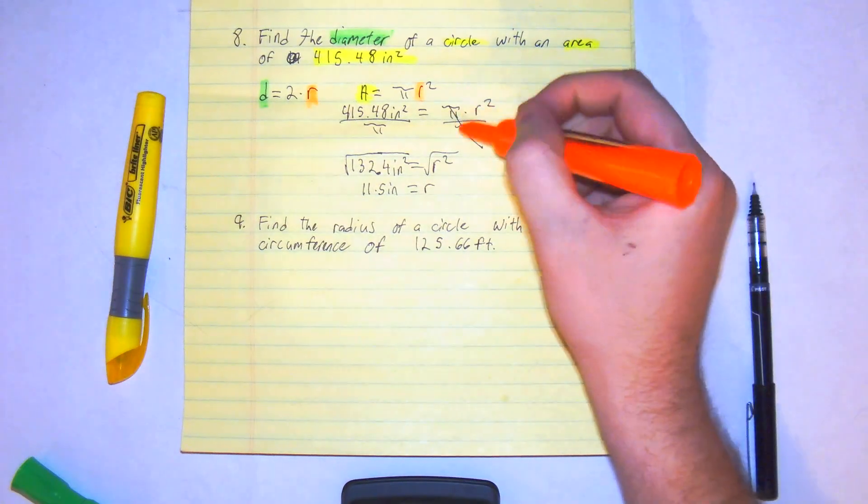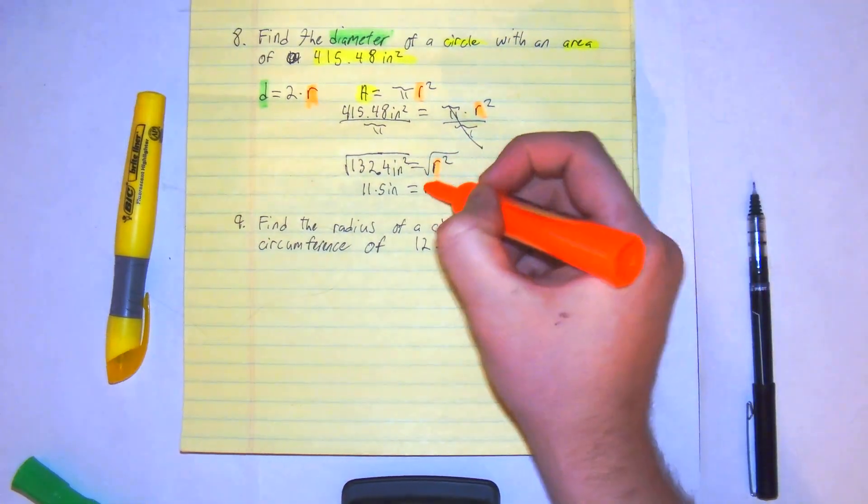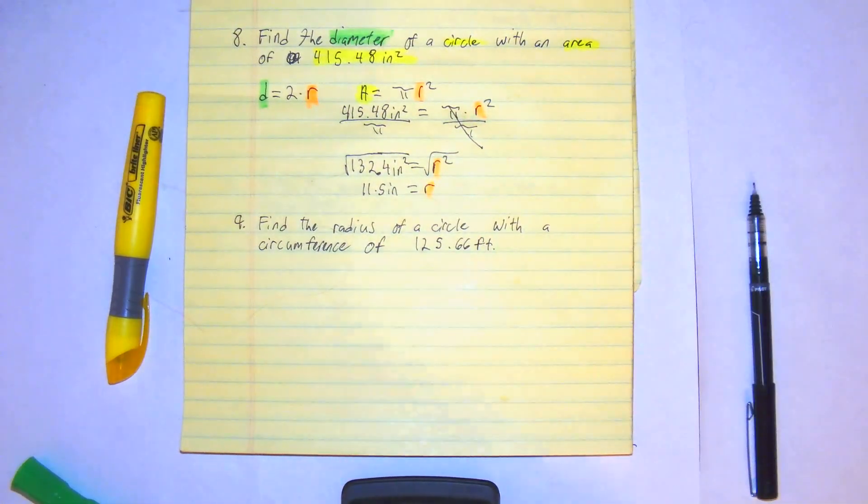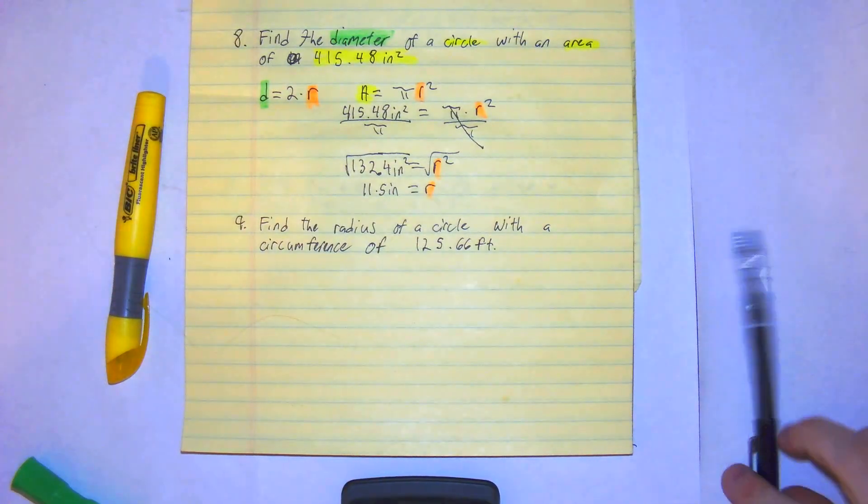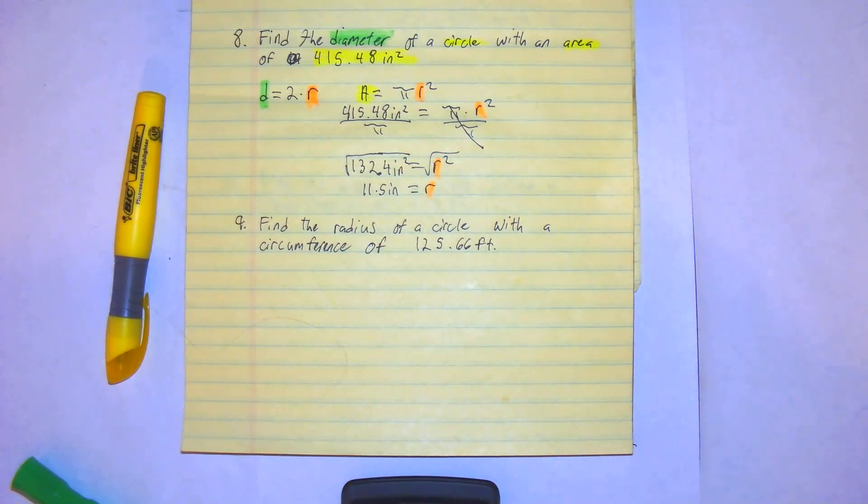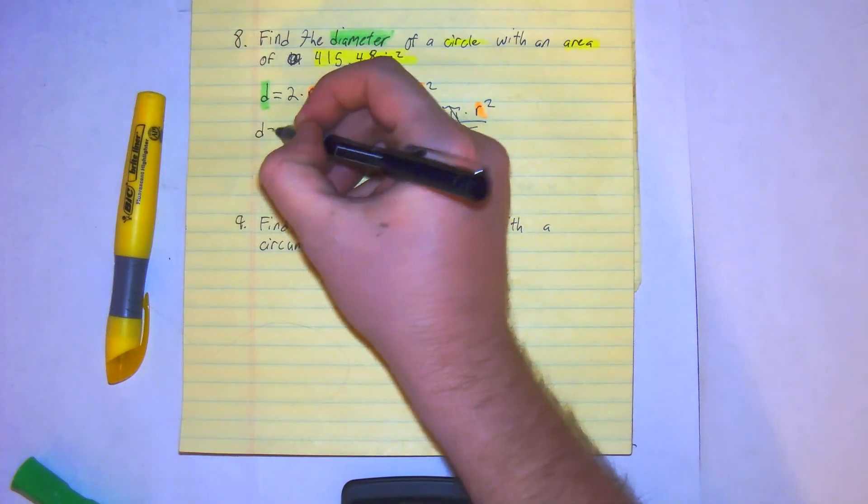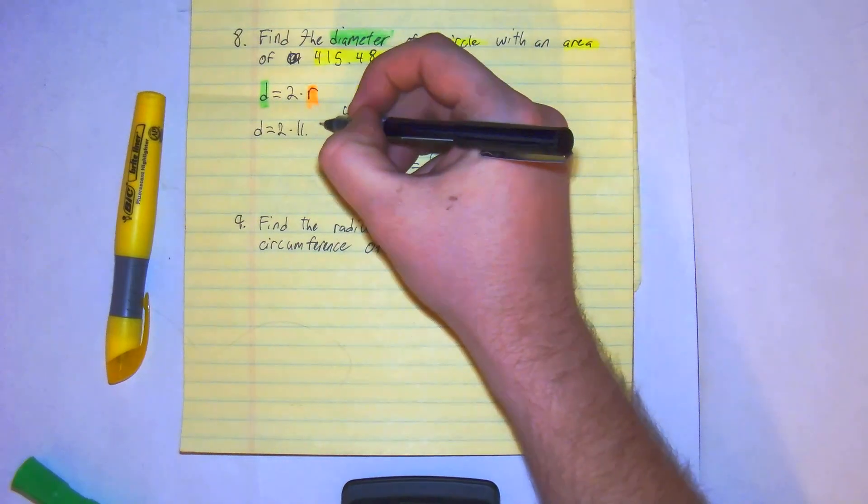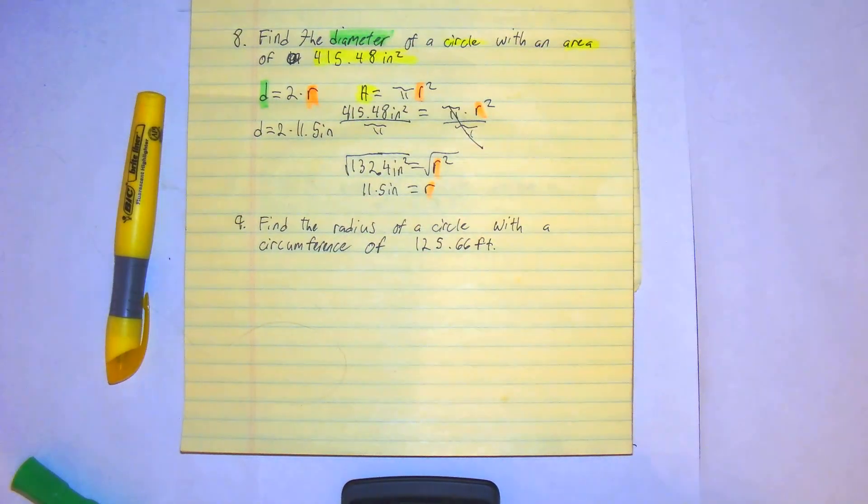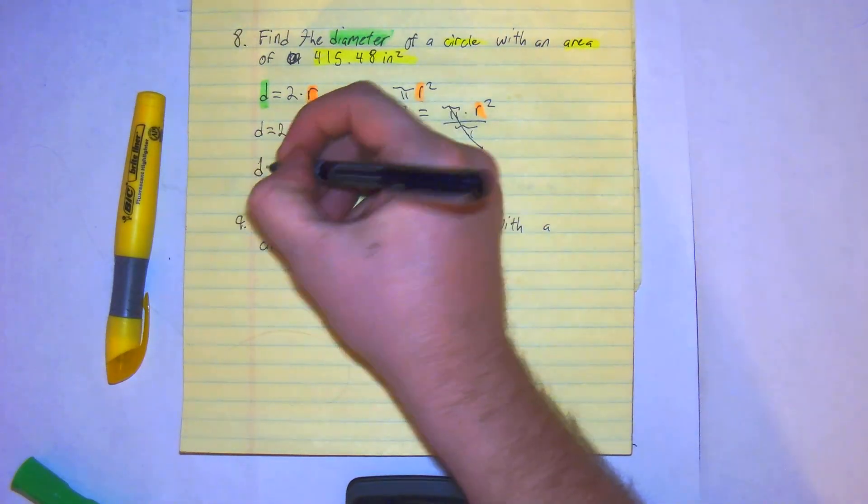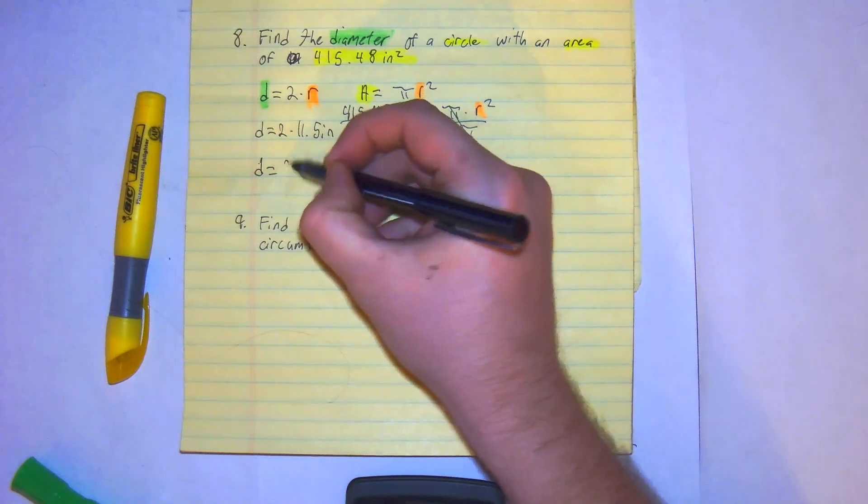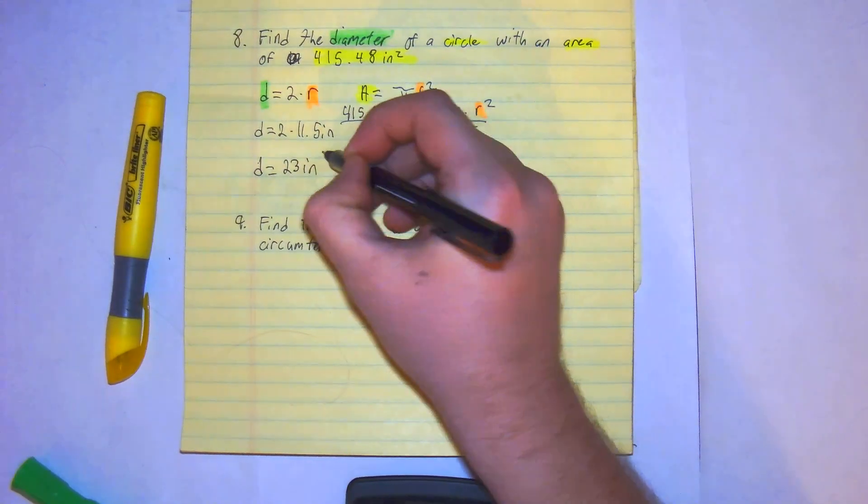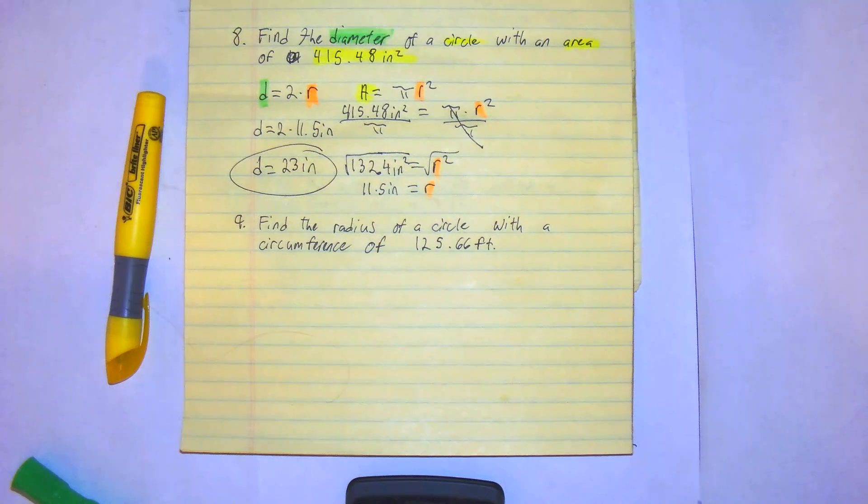So right here, as you can follow our journey, we're trying to isolate it and we eventually did. So now we're going to plug this 11.5 inches in to get our diameter. So we get d equals 2 times 11.5 inches. 11.5 times 2, the diameter is roughly 23 inches. And that's how you would do number 8.